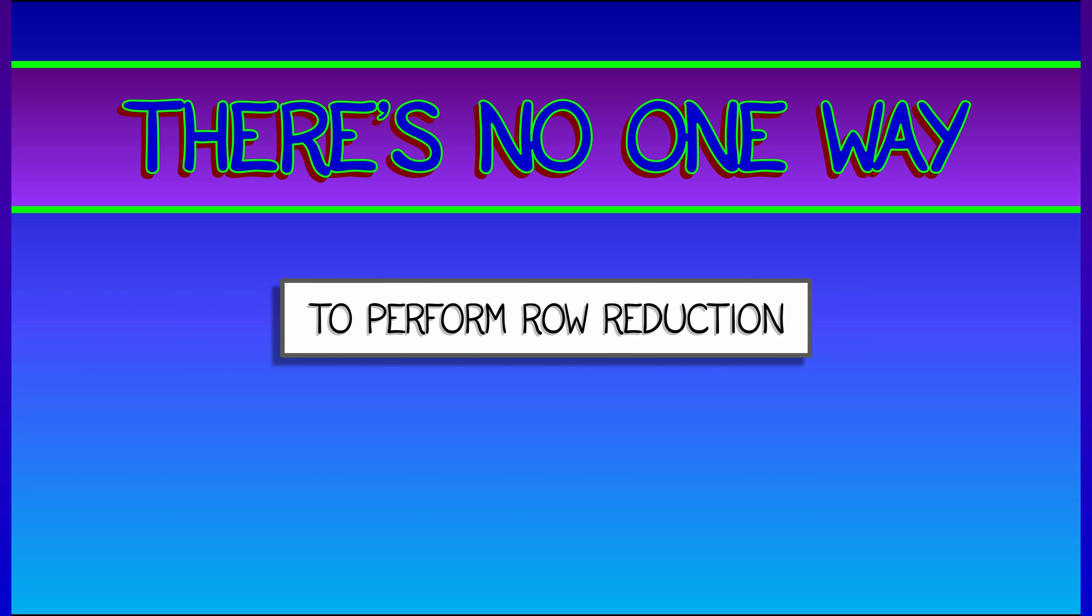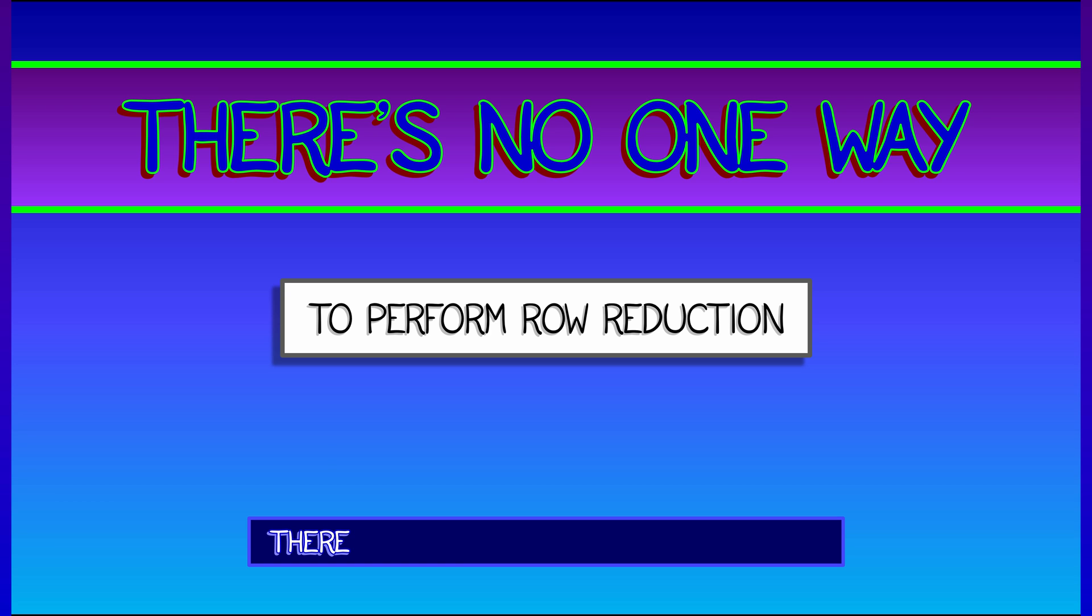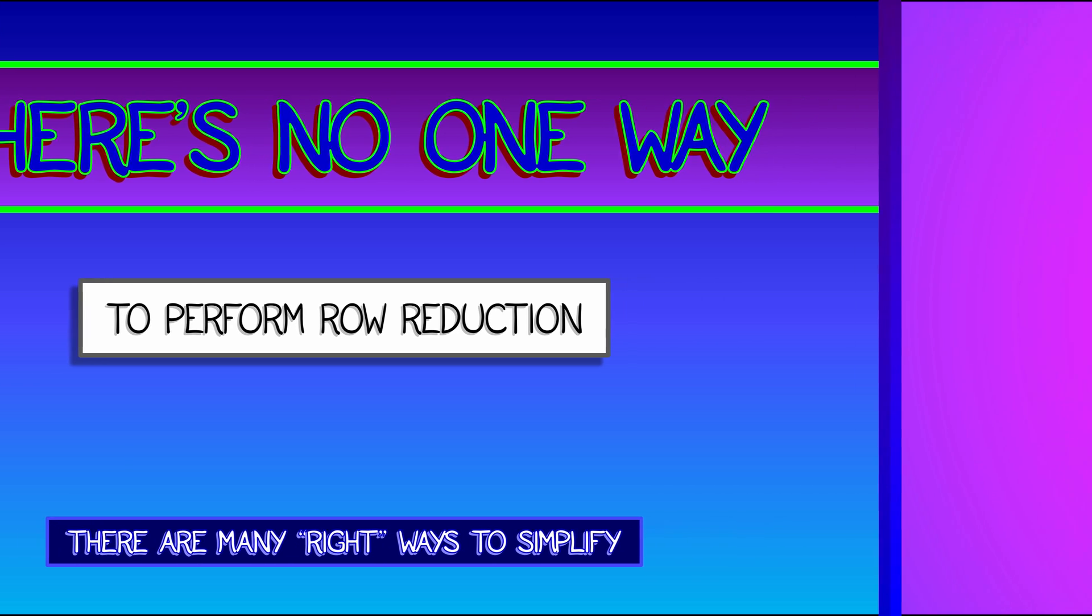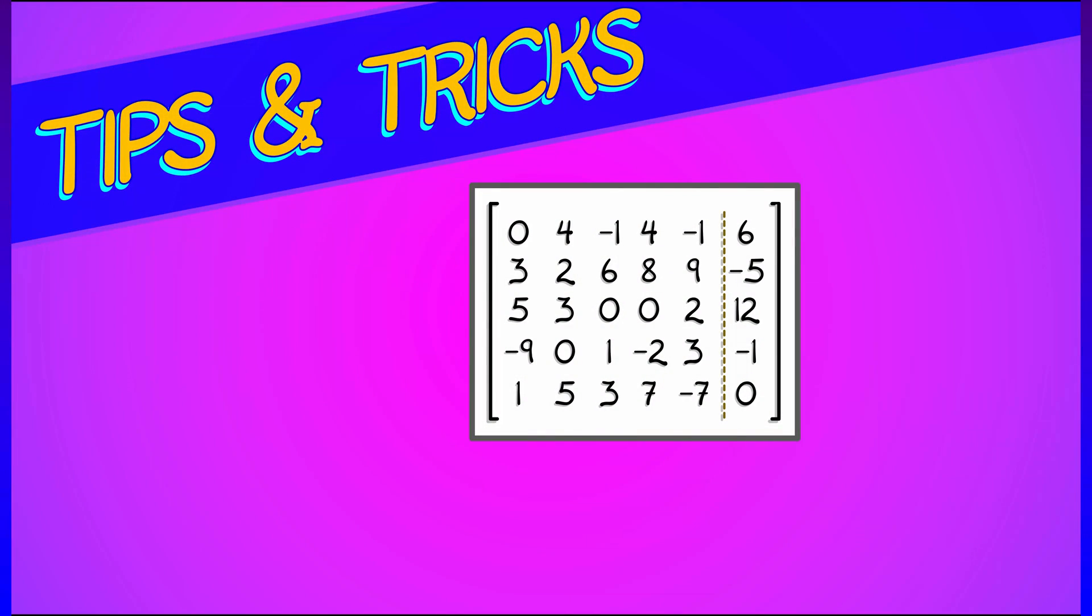In general, there's no one right way to do row reduction. There are lots of different ways that you can simplify a matrix to make it triangular. You're going to have to figure out which way is best, but there are some tips that I might suggest.